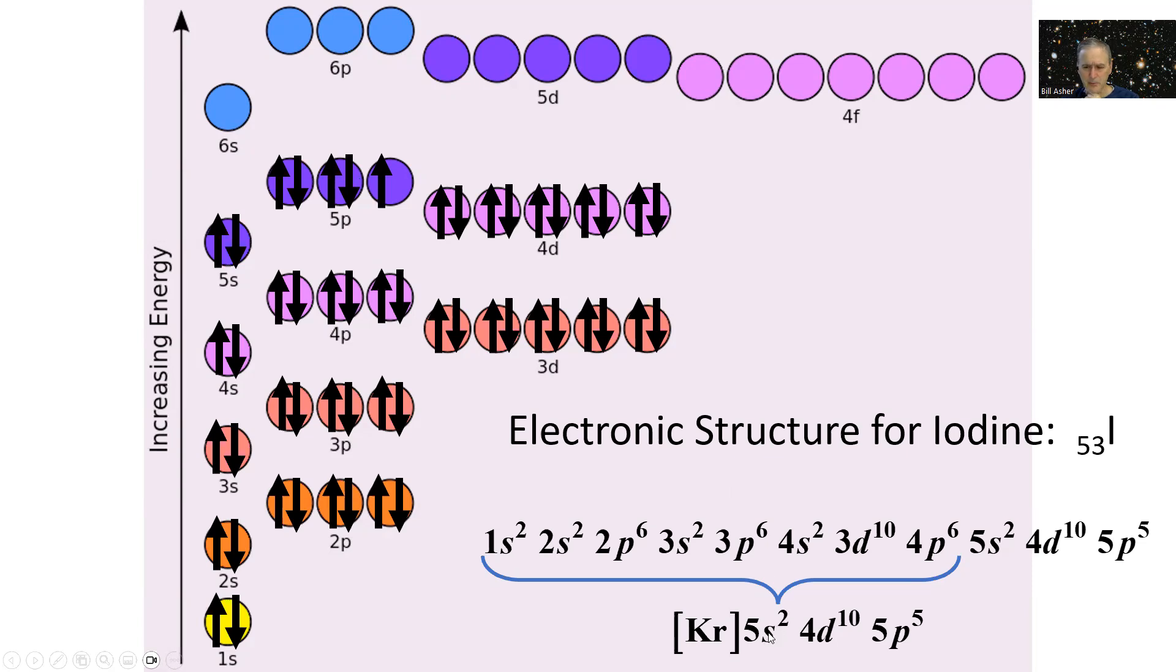That's iodine. Its structure looks like this, all the way up to 4d¹⁰, and then 5p⁵ for 5 electrons in the p orbital. It looks like krypton, where now it's got 5s² 4d¹⁰ 5p⁵. These don't count to the valence, so there's 2 plus 5, which is 7 electrons in iodine's valence shell.